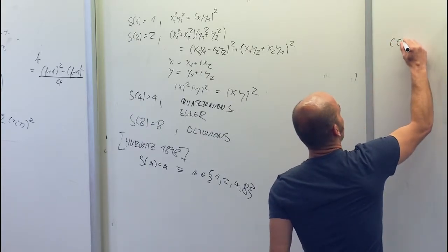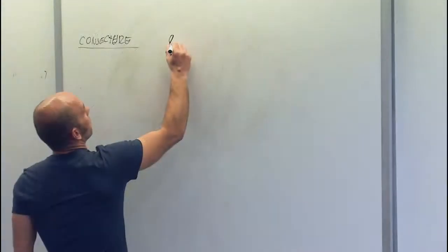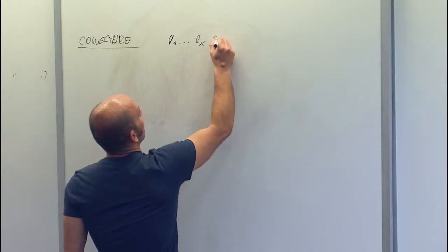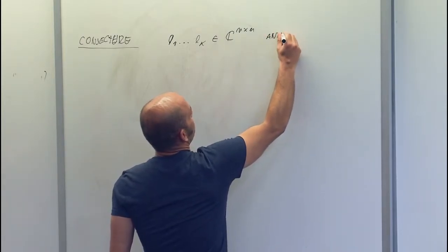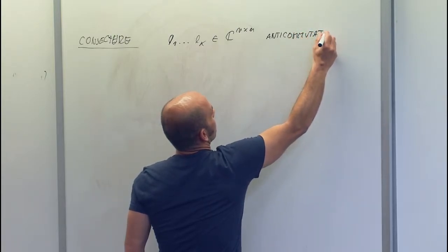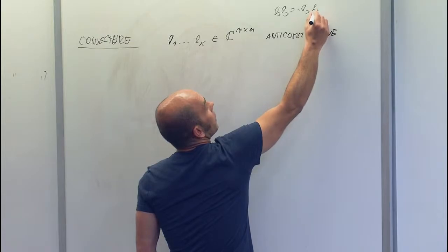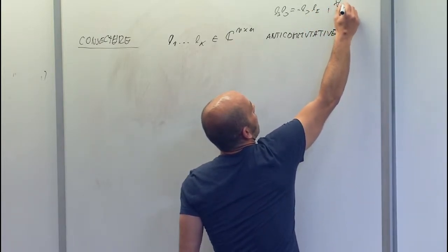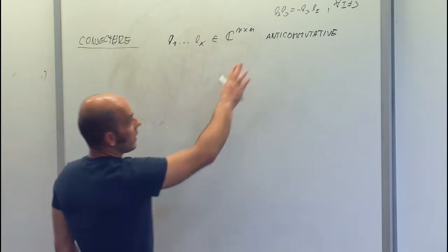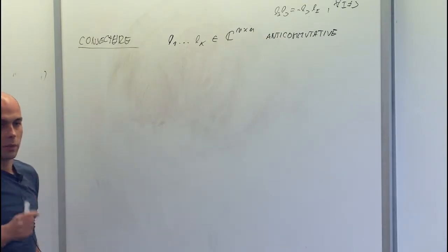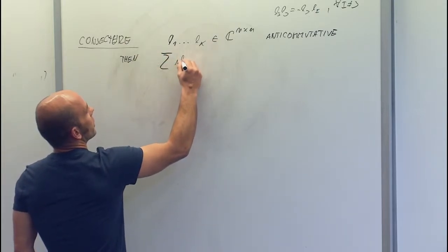The conjecture: let E₁ through Eₖ be complex n×n matrices which are anti-commutative, meaning EᵢEⱼ = −EⱼEᵢ whenever i ≠ j. Then the sum of rank(Eᵢ²) over all i is at most O(n log n). The statement is trying to say that it's not easy to construct anti-commuting matrices — anti-commutativity is quite a strong condition — and if you have such a family, the ranks of the matrices cannot be too large.